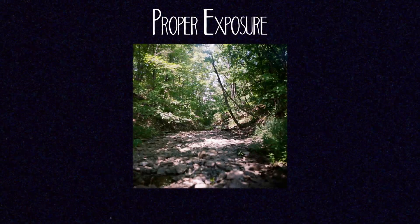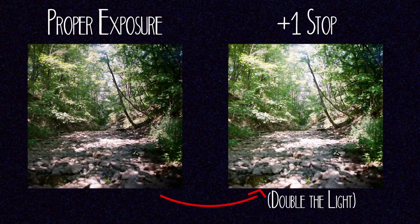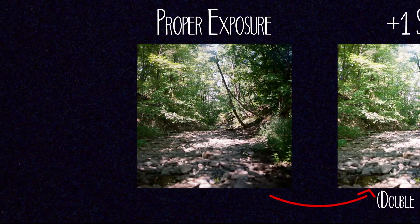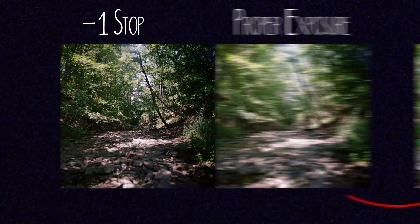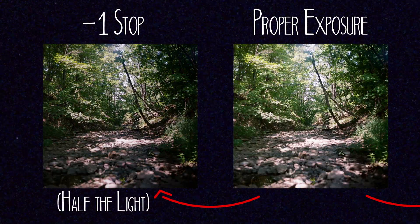Now when we're determining exposure, we measure light in what is called a stop. A stop of light is either double your light or half your light. Stops are also something I talked about in the ISO video because ISO, aperture, and shutter speed all control the amount of stops of light that you're letting into your image. If I say that I will increase my exposure by one stop, it means that I'm going to let in double the amount of light from my previous exposure. And if I say that I'm going to decrease my exposure, it means that I'm going to let only half the amount of light in from my previous exposure.